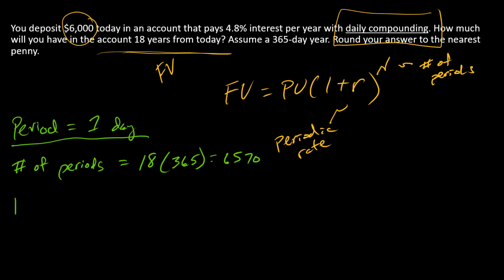Our periodic rate is the annual interest rate of 4.8%, so 0.048 divided by the number of periods per year, and so that's 365. This, at least showing six decimals, is 0.000132 per day.